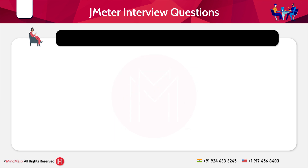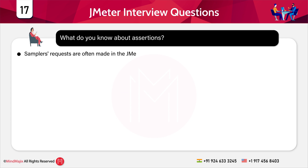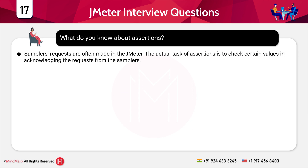The next question is: what do you know about assertions? Sampler requests are often made in JMeter. The actual task of assertions is to check certain values in acknowledging the requests from the samplers. Some of the assertions used very frequently are XPath assertion, XML assertion, and HTML assertion. Apart from this, the response assertion is also widely used for the same purpose.